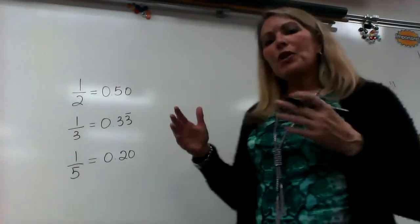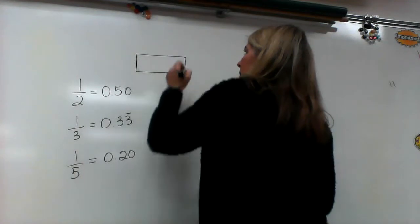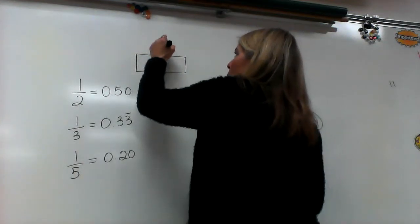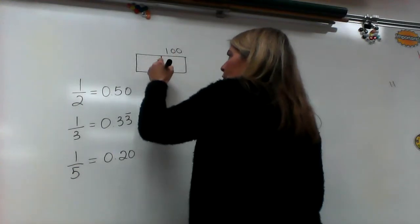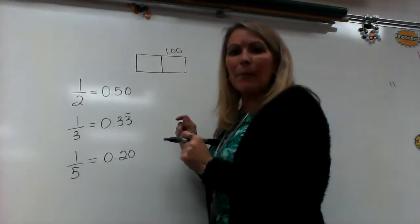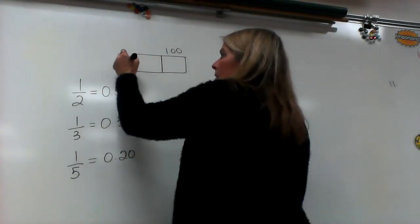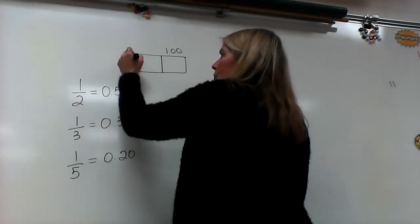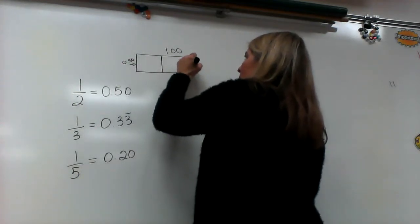What I want you to understand is that if I've got a piece, and this whole piece is 100 hundredths. If I divide it into two, I've doubled my pieces, but I've halved the size. So, that means that each piece of this is 50 hundredths and 50 hundredths.